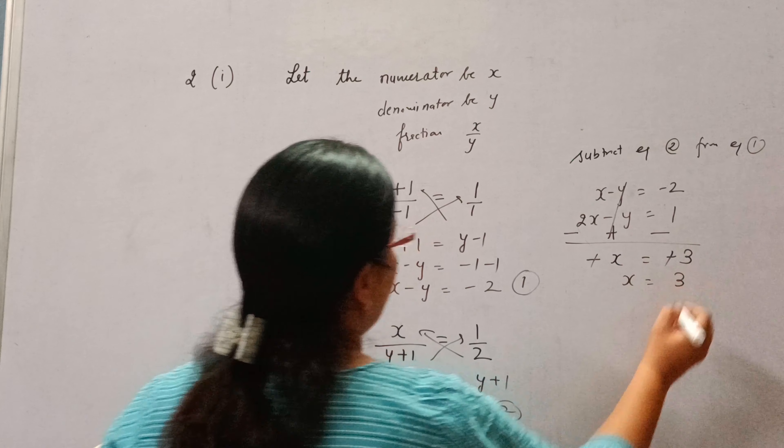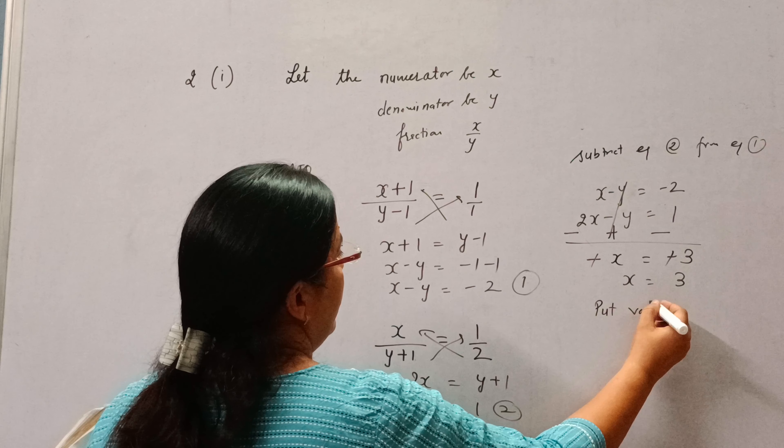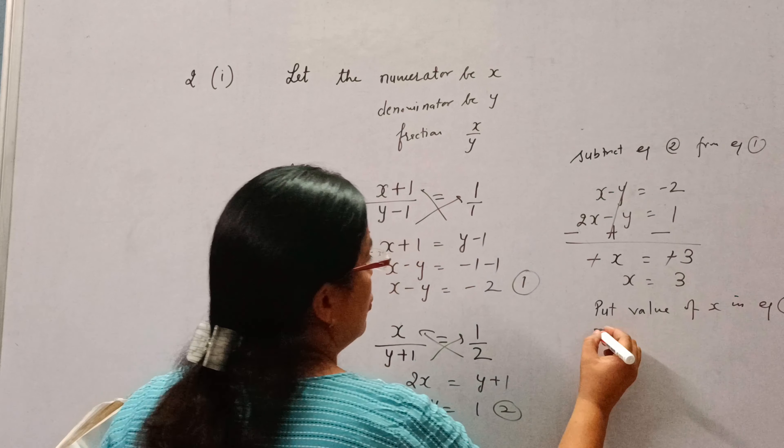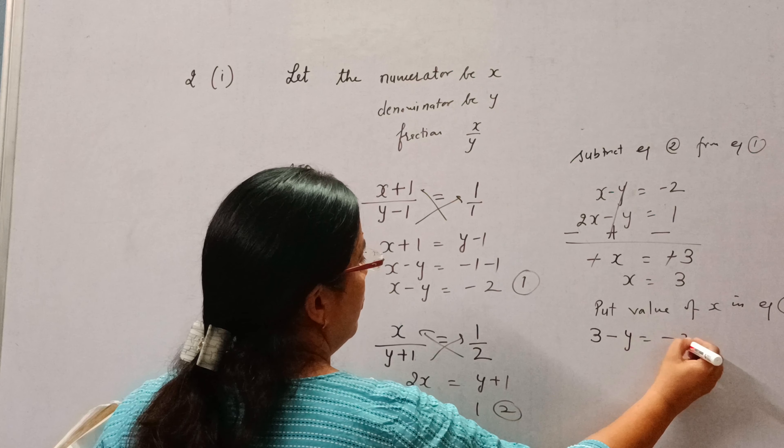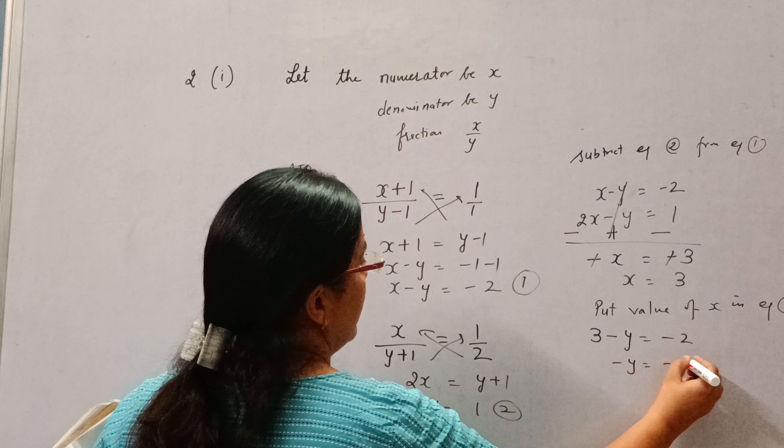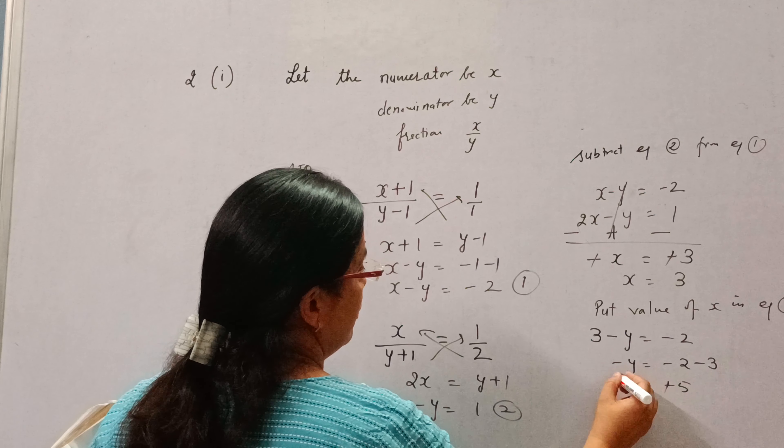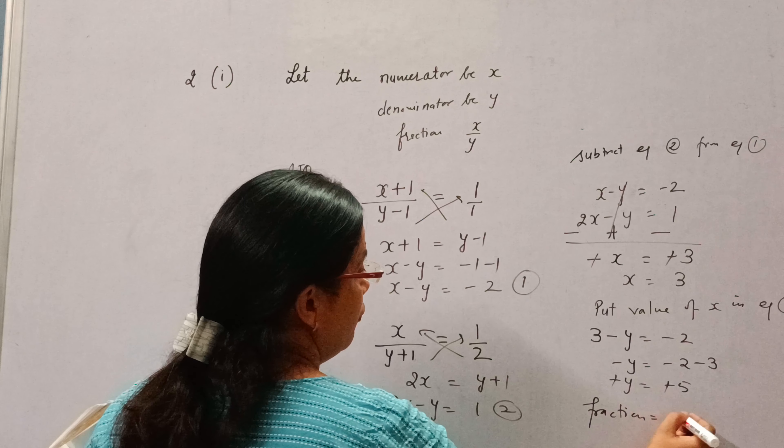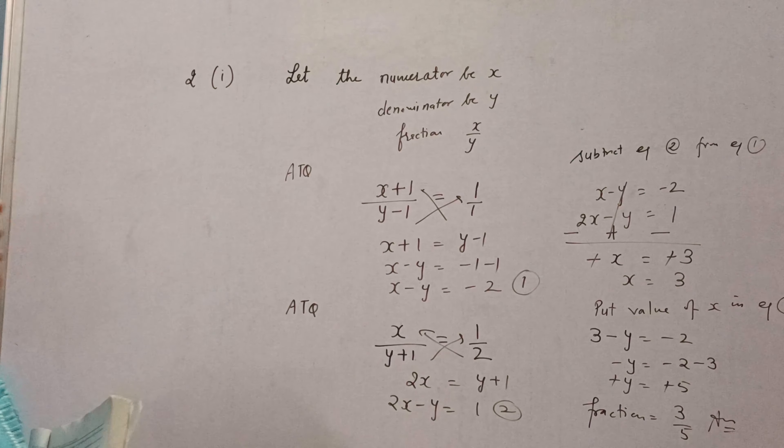So the value of x is 3. Now put the value of x in equation 1. Equation 1 is x minus y equals minus 2. So 3 minus y equals minus 2, therefore y is 5. So the fraction will be x upon y, that is 3 upon 5. This is the answer.